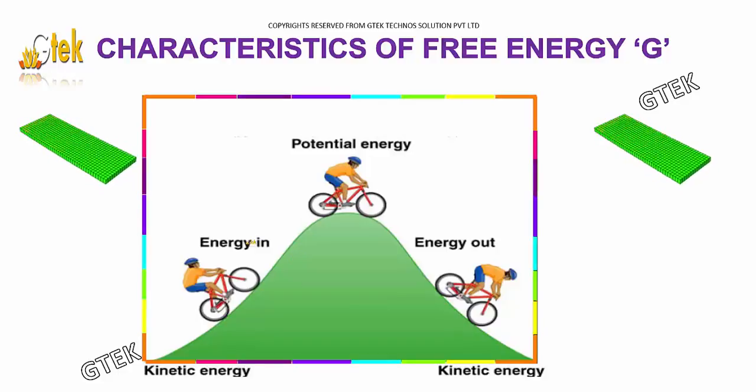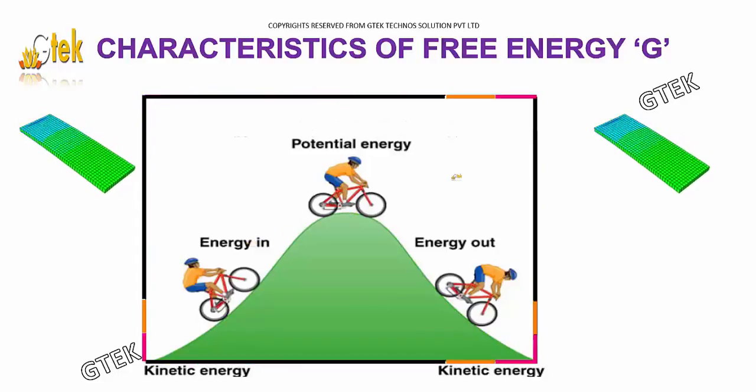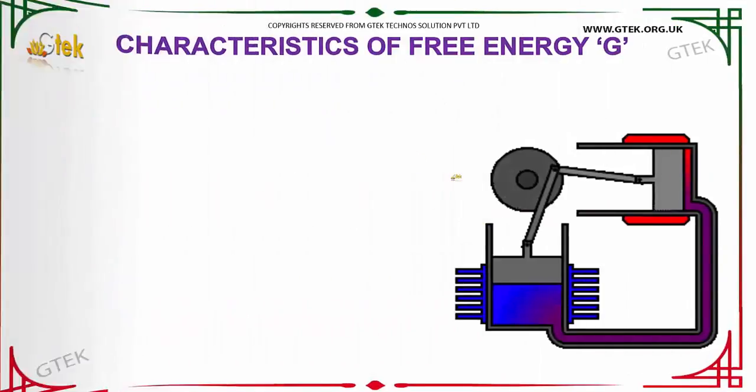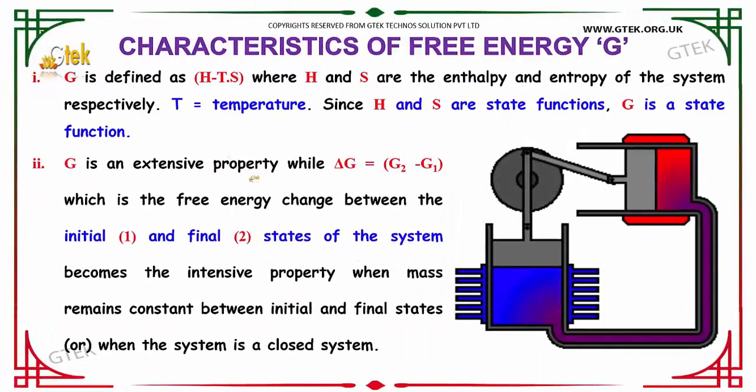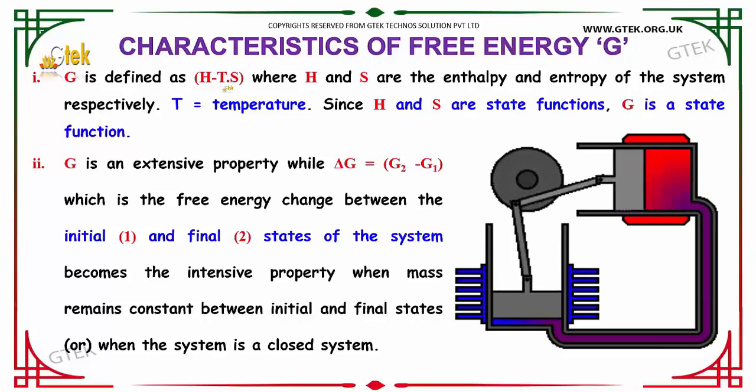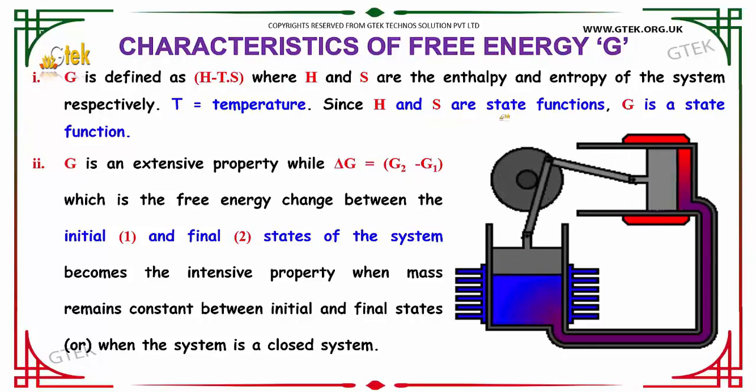Let's talk about the characteristics of free energy. G is defined as H minus T into S, where H and S are the enthalpy and entropy of the system and T is the temperature. So H and S are called as state functions and G is a state function too.